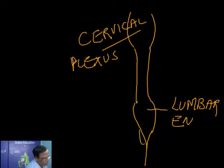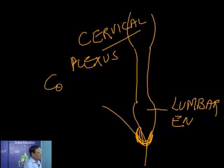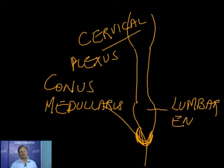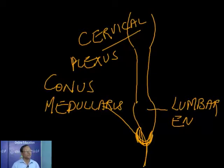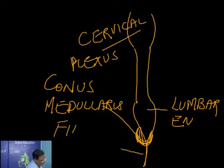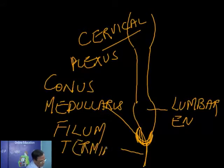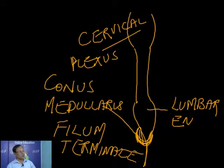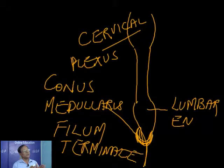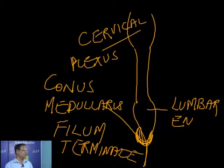At the terminal end, the spinal cord becomes somewhat conical in shape — that structure is called conus medullaris. Beyond that, we have a filamentous structure formed by the meninges, called the filum terminale. So the spinal cord is a tubular structure with two enlargements, a conical structure at its end called conus medullaris, followed by the filamentous filum terminale.